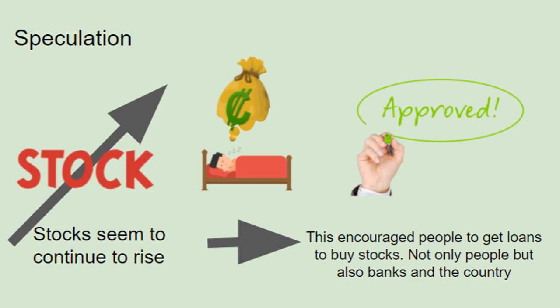During the 20s the stock market just kept growing and growing. Many people, banks, and countries dreamt of making money by investing in stocks. They all believed that the stock market would just continue to grow and everyone would become rich. This dream encouraged many individuals, companies, banks, and even countries to borrow money to buy more stocks. Everyone speculated that their earnings from the stocks would pay off their loans and interest while leaving them with a huge profit.